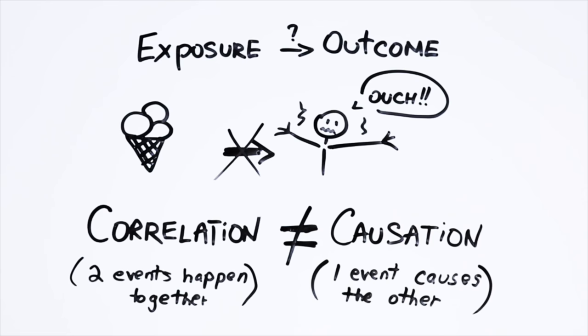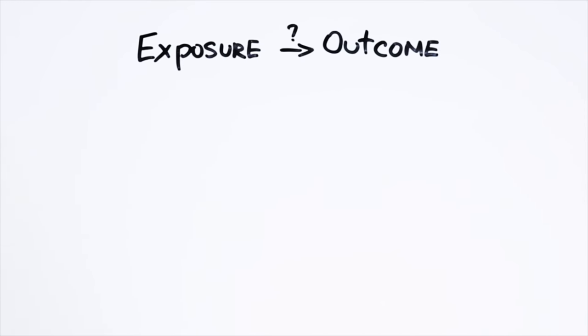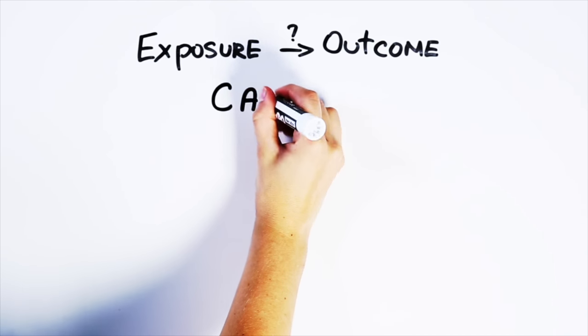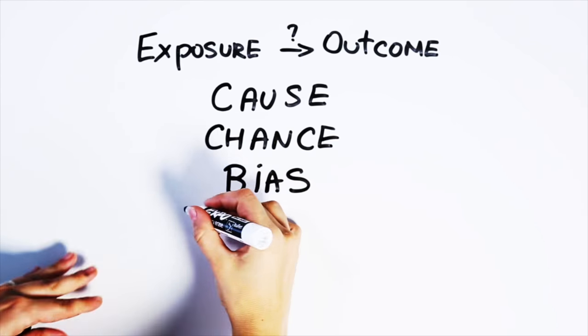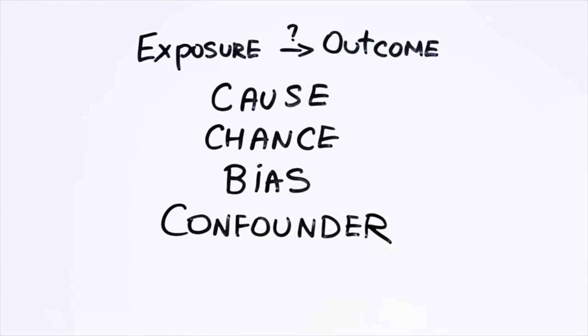And while this example is pretty obvious, making sense of epidemiology data is often really hard. And care needs to be taken that we don't jump to the wrong conclusions. When examining relationships between exposures and health outcomes, there's a number of reasons why we might see an association. These include an actual cause, pure chance, bias, and what epidemiologists call confounding, other things interfering with what we observe.